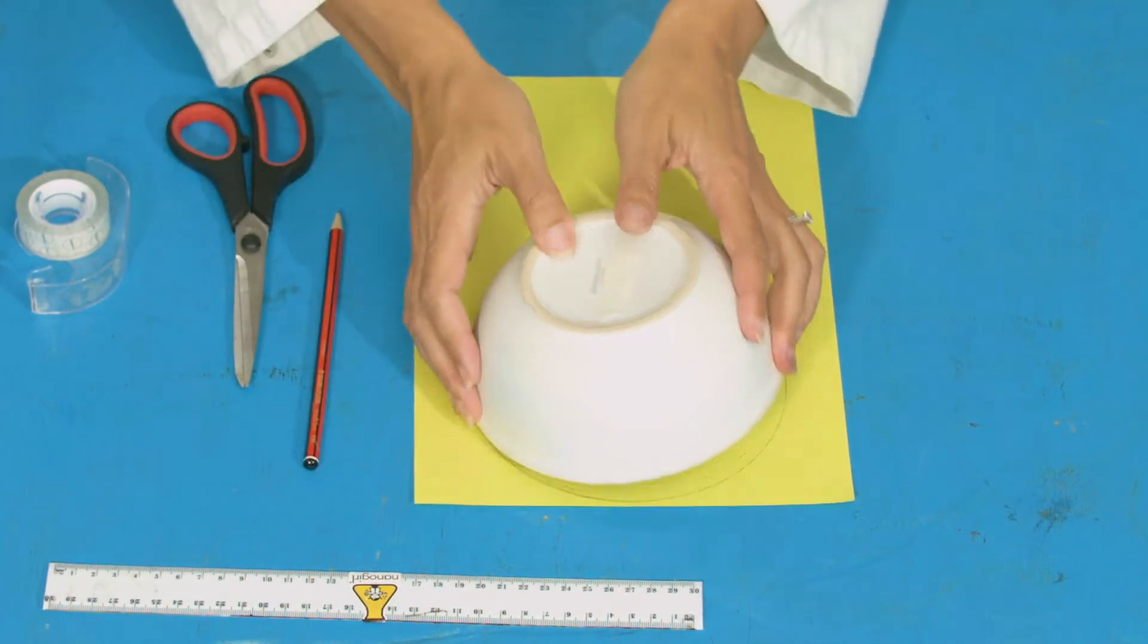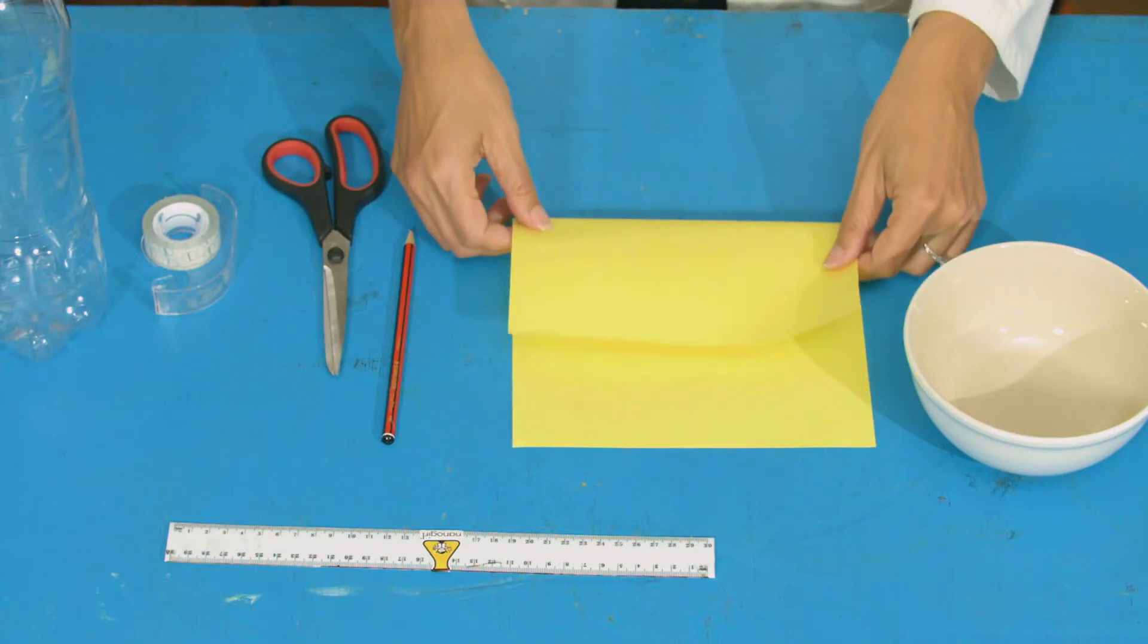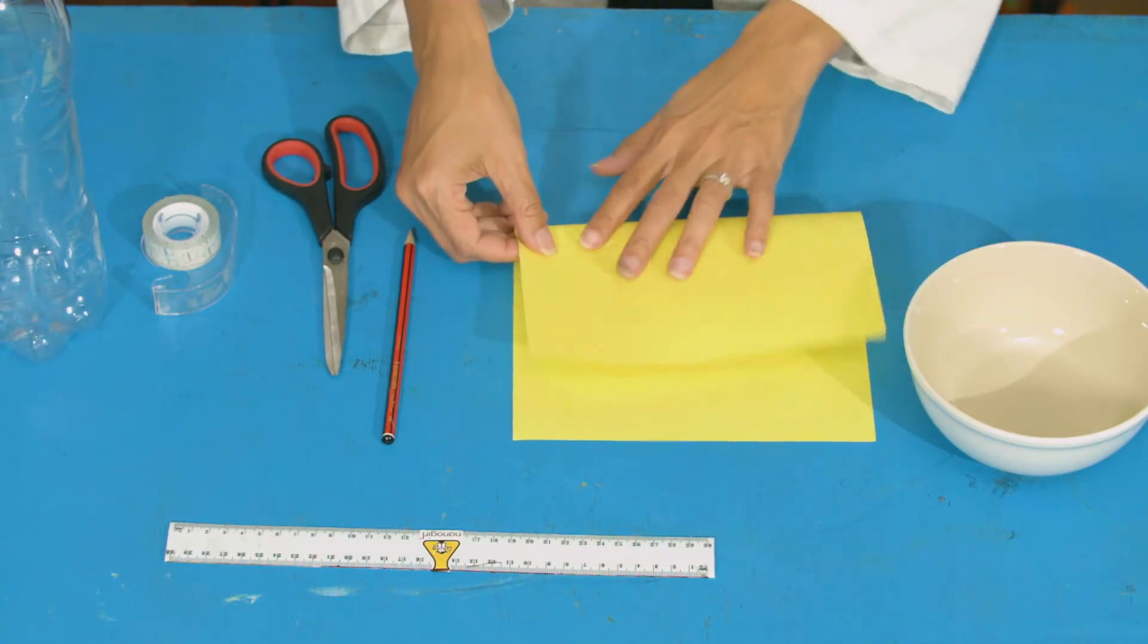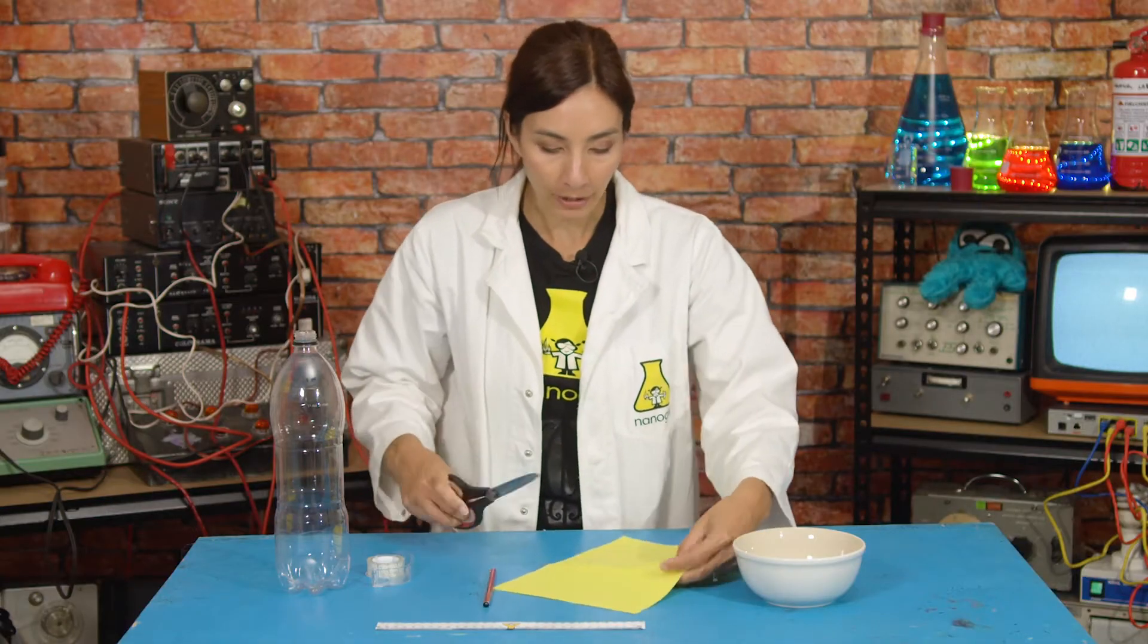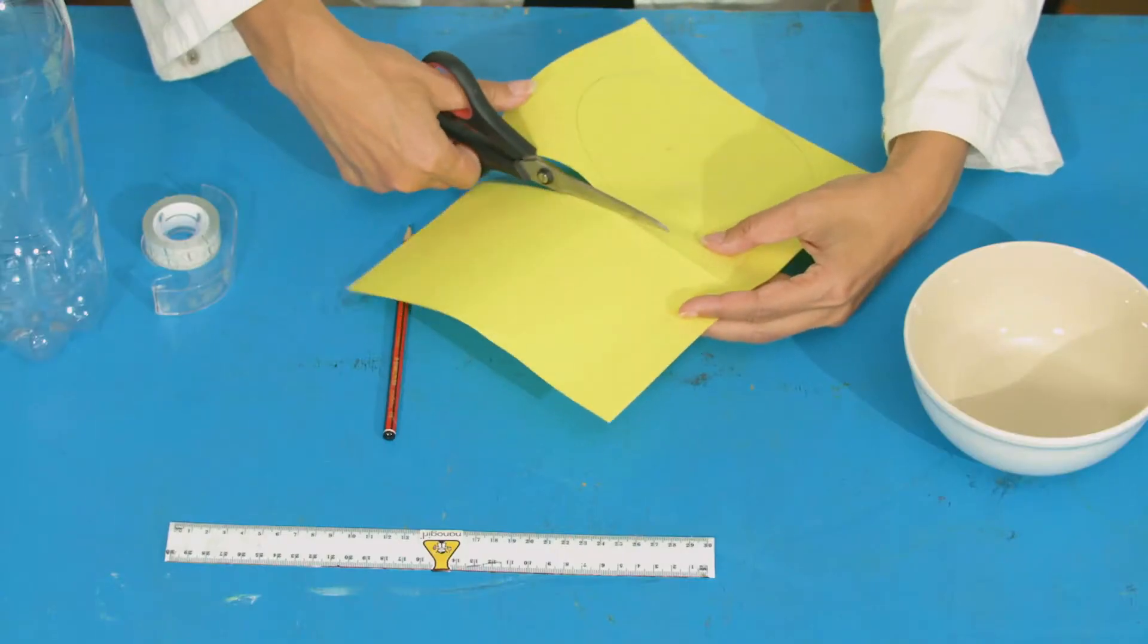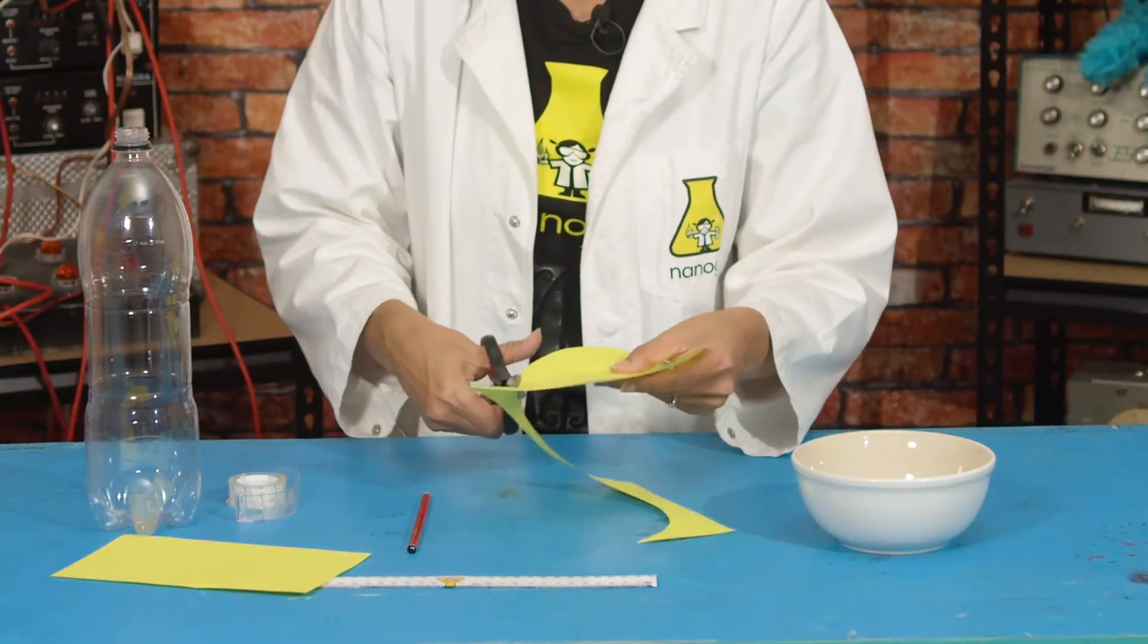I'm going to fold my piece of paper so the bit that doesn't have the circle on it's folded there, and then I can cut that bit out because we're going to need that rectangle of paper later. Then we're going to cut out our circle.